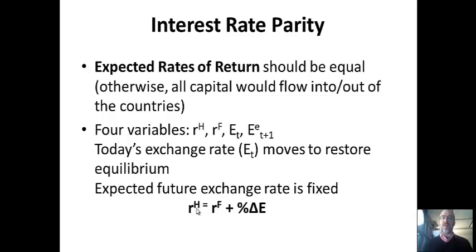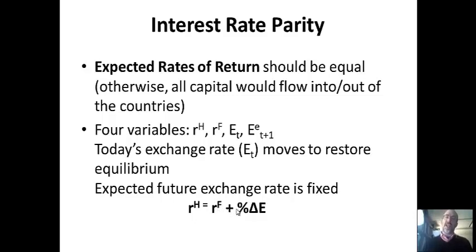The easiest way to look at this relationship is that the home interest rate equals the foreign interest rate plus the percentage appreciation of the foreign currency. If I'm an American investing in the U.S., I earn a fixed amount that doesn't depend on the exchange rate—I never have to exchange money. But if I invest abroad, I have to convert my dollars to the foreign currency, earn interest, and then convert back. If the Euro appreciates while my money is there, I'll have more dollars; if it depreciates, I'll have less—this component can even be negative.